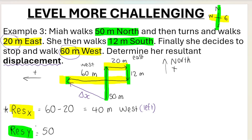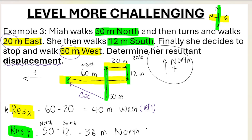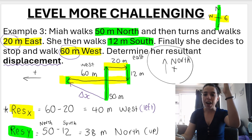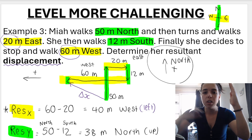So, 50 minus 12 gives me 38 meters north. Because it gives a positive answer, I know it's going in the positive direction — north. Once you've worked out one answer for up or down — 38 meters up — and one answer for left or right — 40 meters west — then you can create your right-angled triangle.